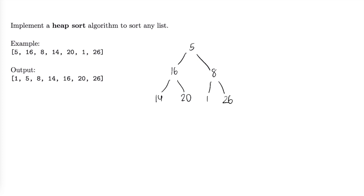To heapify this we have to consider the last parent node, which is going to be 8. This is our last parent node because all the rest of the nodes are leaf nodes — they don't have any children. So we consider 8: 8 is greater than 1 but 8 is not greater than 26, so we want to move 26 up. We'll move 26 up here and move 8 down.